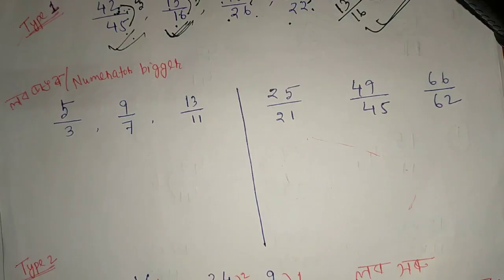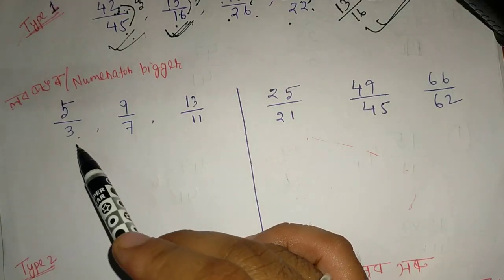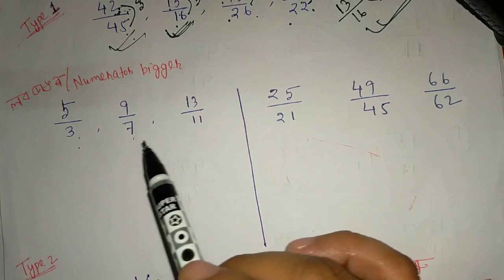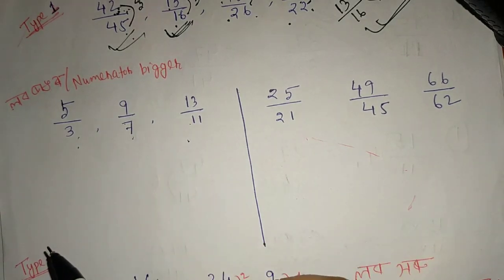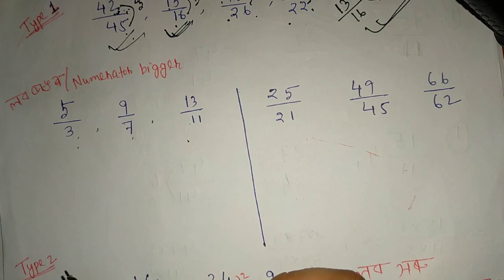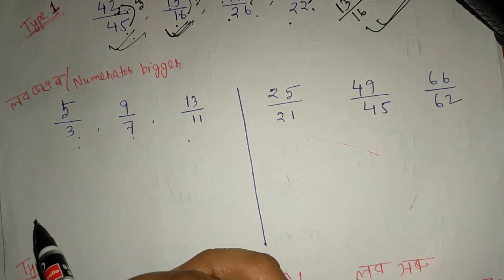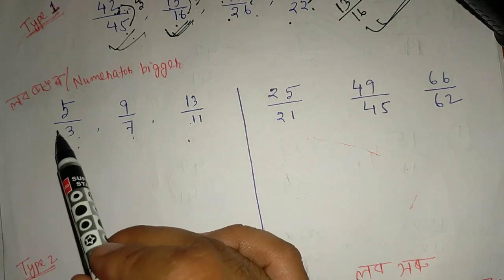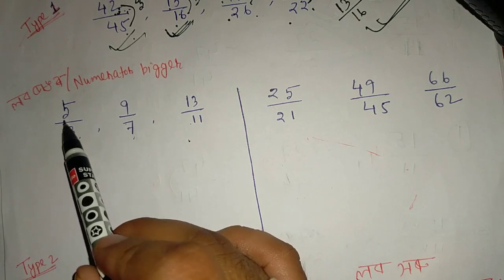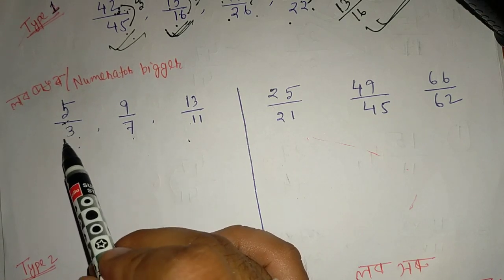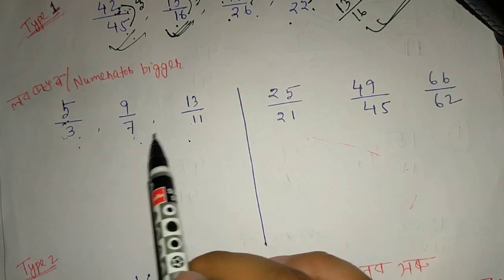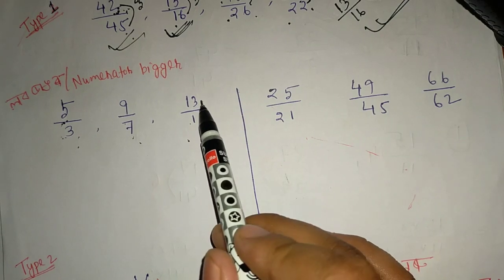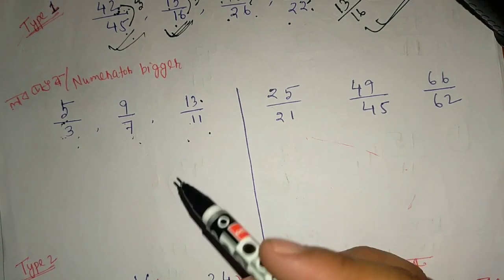My next question: 5 by 3, 9 by 7, 13 by 11. The question is 5 by 3, 9 by 7, 13 by 11. So the question is 5 by 3, 9 by 7, 13 by 11.